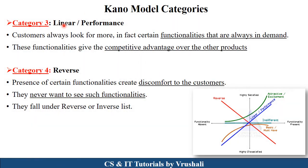The next category is linear and performance features. These are functionalities that are always in demand. For example, Instagram has the reel functionality to make a reel, but WhatsApp doesn't have this functionality — so this functionality makes the product different. Looking at the diagram: when this functionality is present, customers are highly satisfied. But if this functionality is absent, customers are highly dissatisfied.